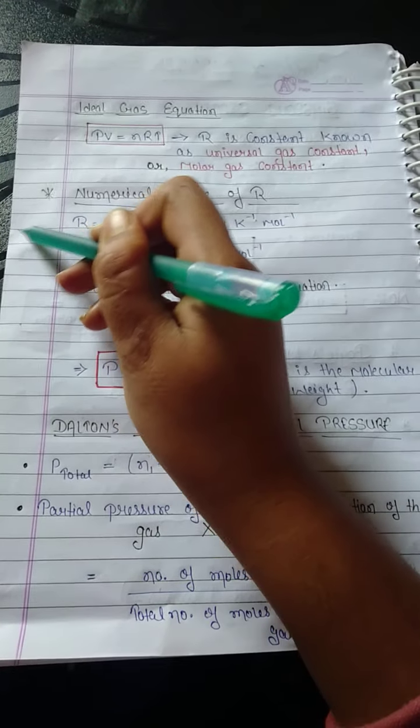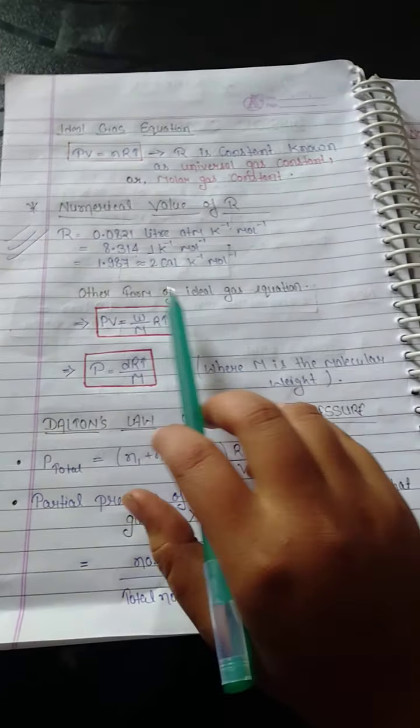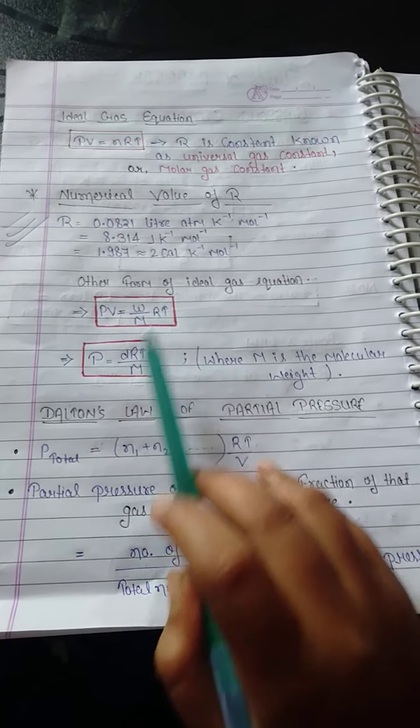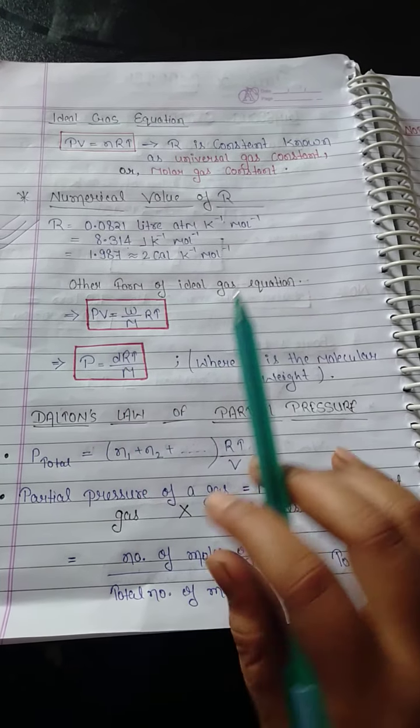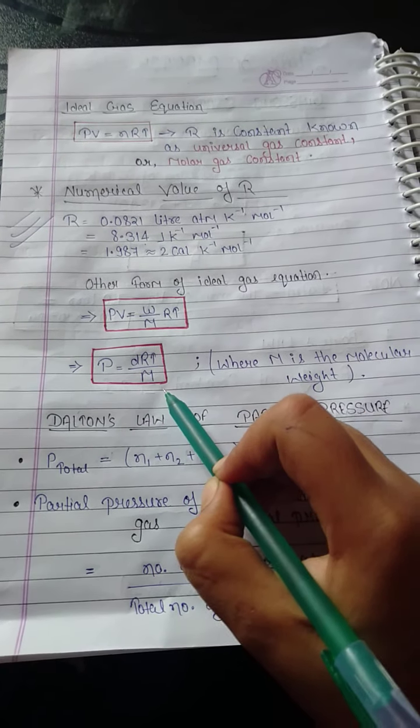And other forms of ideal gas equation is this. And this, when according to the question, if question is asking density, then you have to use this formula. M is equal to molecular weight.